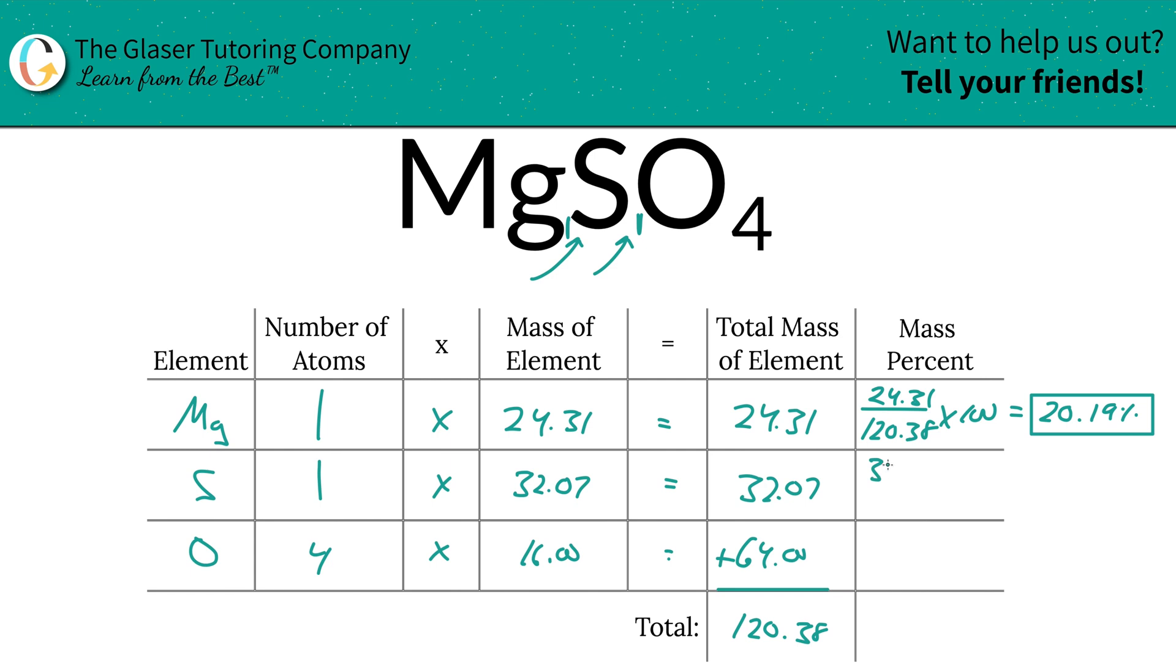Same process is going to apply for the rest. So we'll take the total mass of the sulfur here, 32.07, divided by the total mass of the entire compound, 120.38. Multiply that by 100, and you're going to get a total percentage here of roughly 26.64.